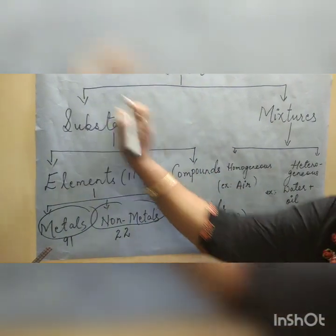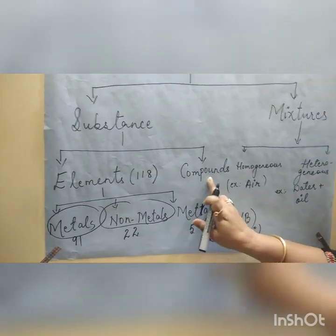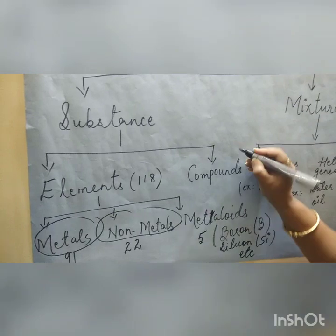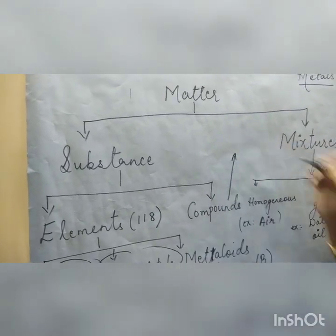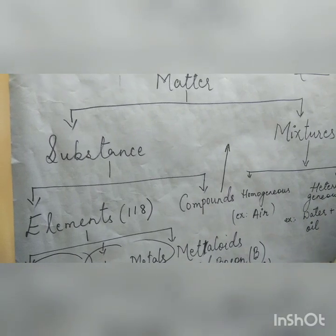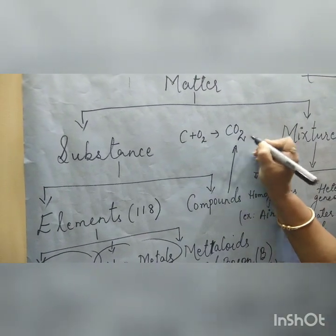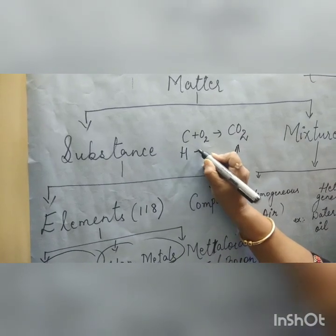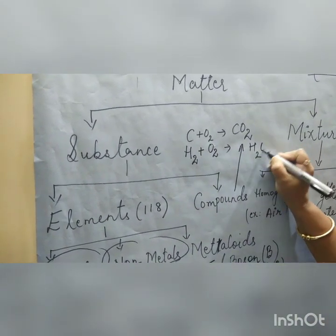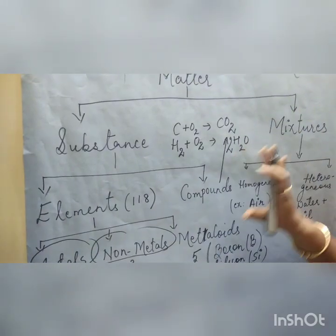From substances we have to study only the elements part, that is metals and non-metals. But let me give you certain examples of compounds as well. Compounds are substances formed by two different elements. For example, carbon plus oxygen gives carbon dioxide (CO2), and H2 plus O2 gives H2O. This is general information about compounds which we don't need to learn in detail.